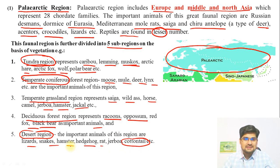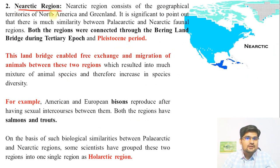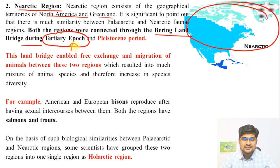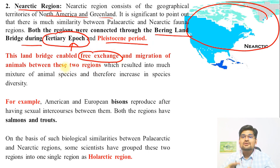To remember this region, practice it on a world map, divide it into sub-parts, and remember at least one or two examples from each. The second region is Nearctic, which is part of North America and Greenland. Both the Palaearctic and Nearctic regions were connected through the Bering land bridge in the Tertiary epoch. This land bridge enabled the free exchange and migration of regional species of animals.